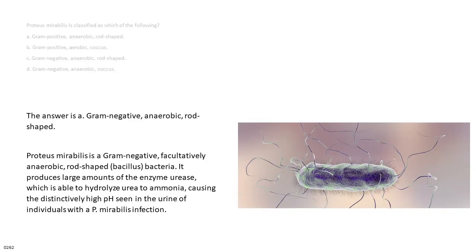The answer is C. Gram-negative, anaerobic, rod-shaped. Proteus mirabilis is a gram-negative, facultatively anaerobic, rod-shaped bacillus. It produces large amounts of the enzyme urease, which is able to hydrolyze urea to ammonia, causing the distinctively high pH seen in the urine of individuals with a Proteus mirabilis infection.